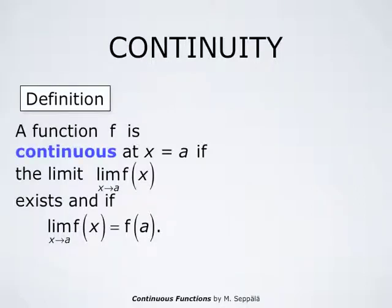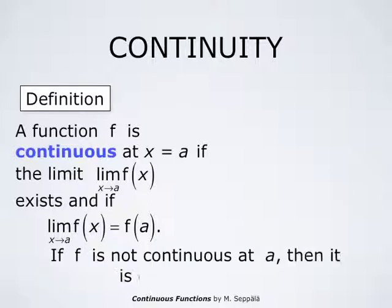Mathematically, we define continuity by saying that a function f is continuous at the point x equals a if the limit as x approaches a of f of x exists and equals the value of the function at the point a. If f is not continuous at a, then it is called discontinuous.